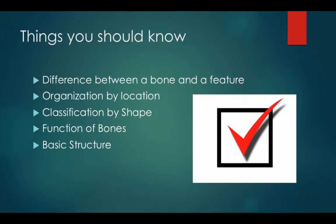Some things you should know: the difference between a bone and a feature, the organization of bones by their location, the classification of bones by their shape, the function of bones, and then the basic structure of bones.